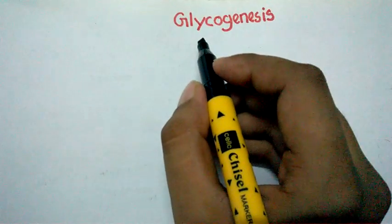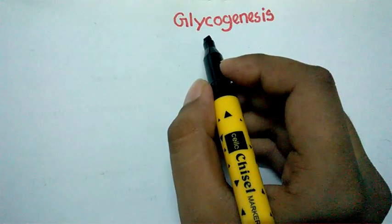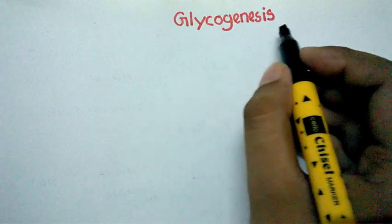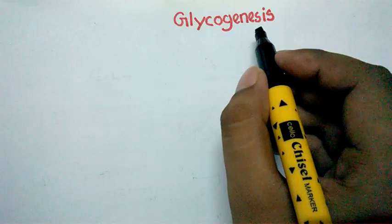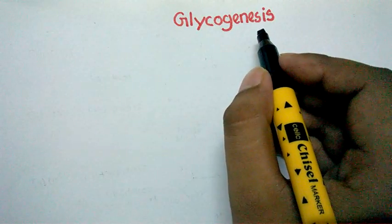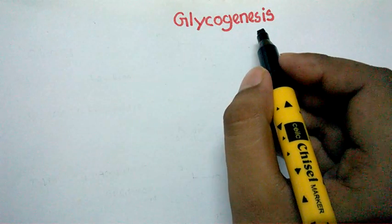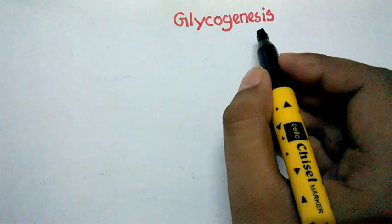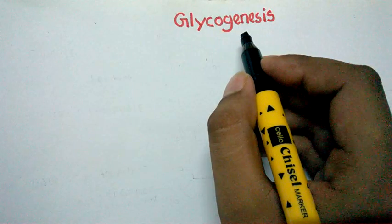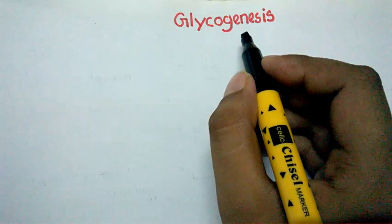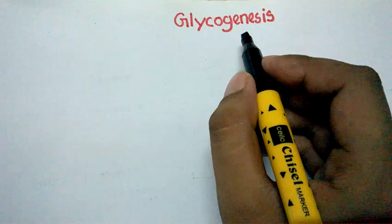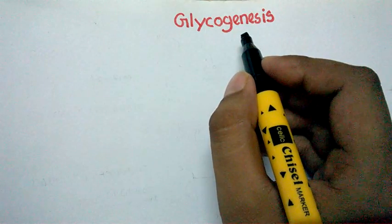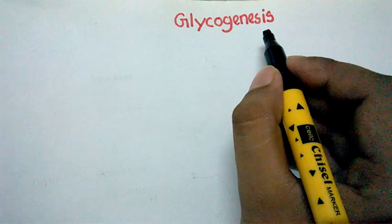In this video I'm going to talk about glycogenesis. 'Glyco' means glycogen and 'genesis' means formation, so this means glycogen formation. When we take a meal of carbohydrates, it gets broken down into glucose, and that glucose has to be stored somewhere inside the body as an energy reserve. The glucose is usually stored in the liver or in the muscles, and the process by which glucose gets converted into glycogen — a storable form — is called glycogenesis.